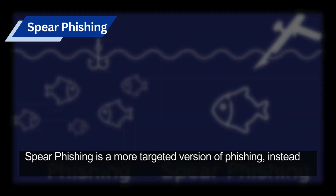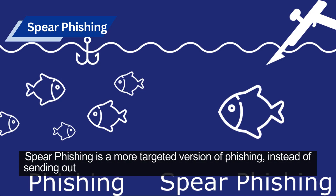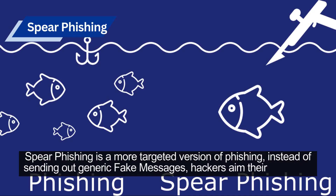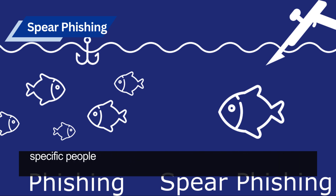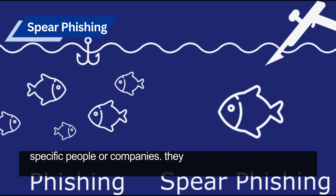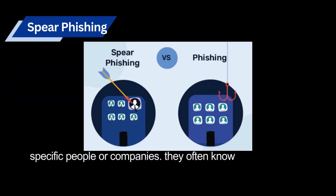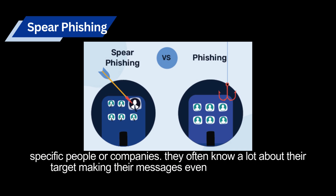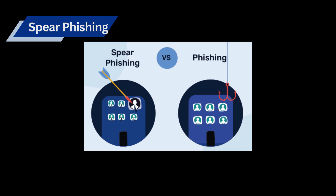Spear phishing is a more targeted version of phishing. Instead of sending out generic fake messages, hackers aim their attacks at specific people or companies. They often know a lot about their target, making their messages even more convincing.